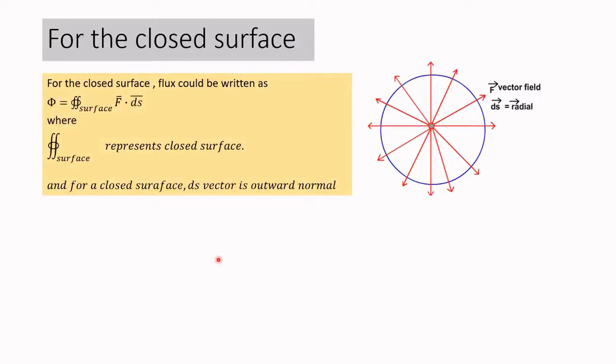Now we are referring to the closed surface. For the closed surface as shown in this particular diagram, flux could be written as phi equals closed surface integral of F bar dot ds bar. This closed circle on the integration sign represents closed surface.